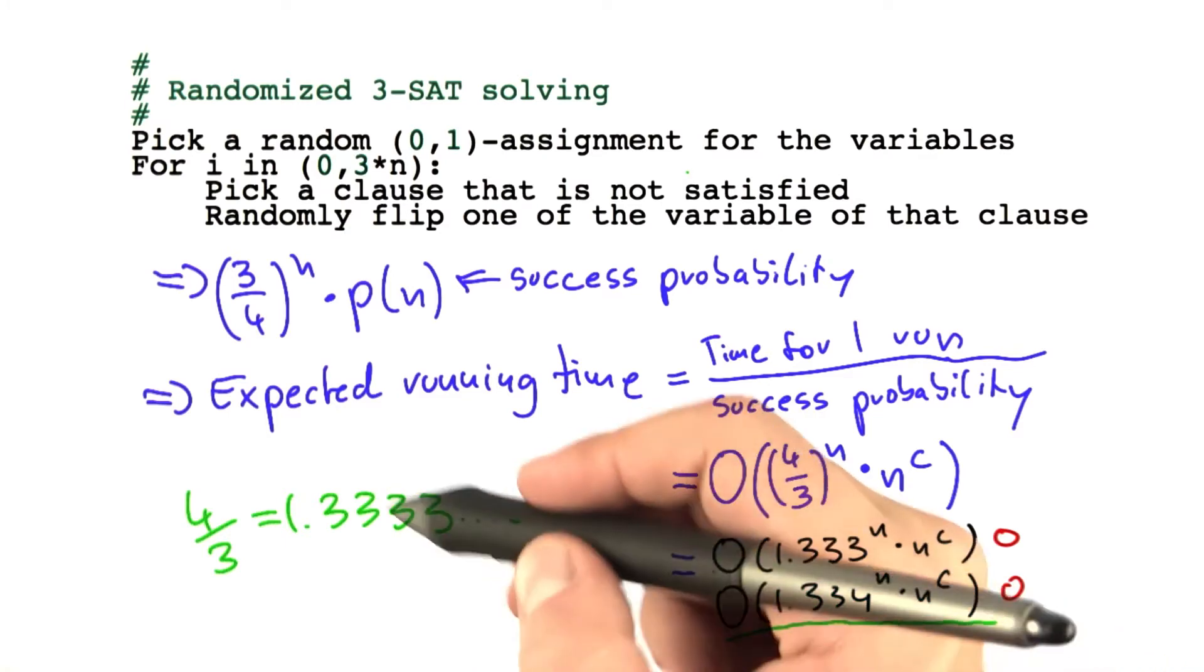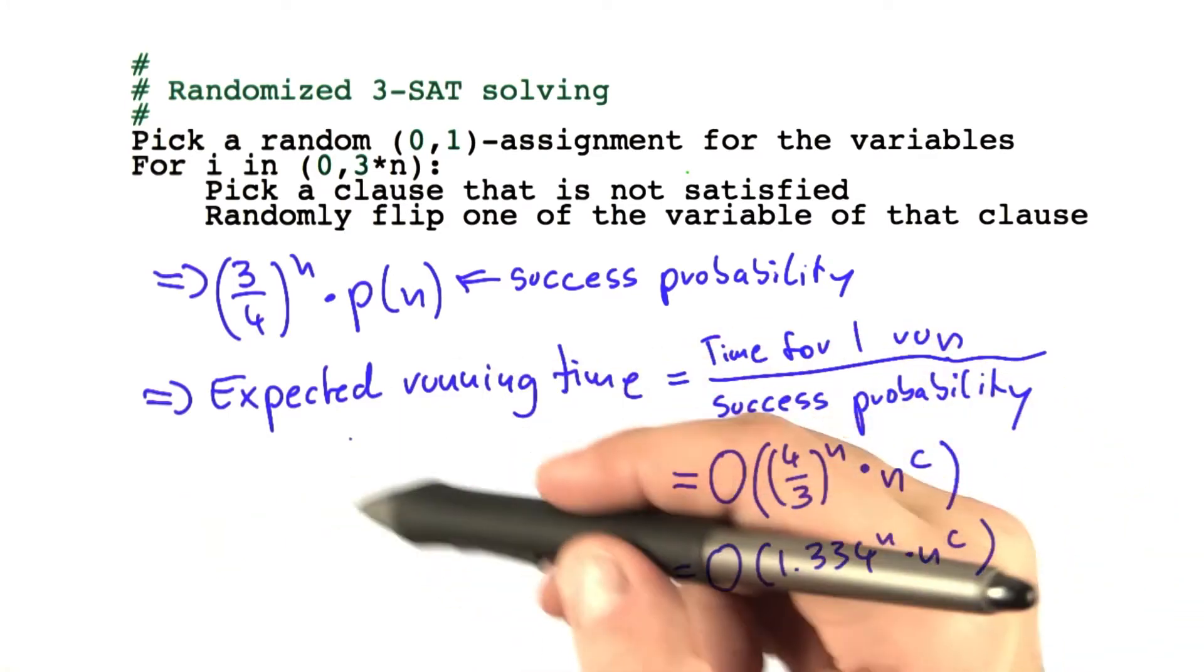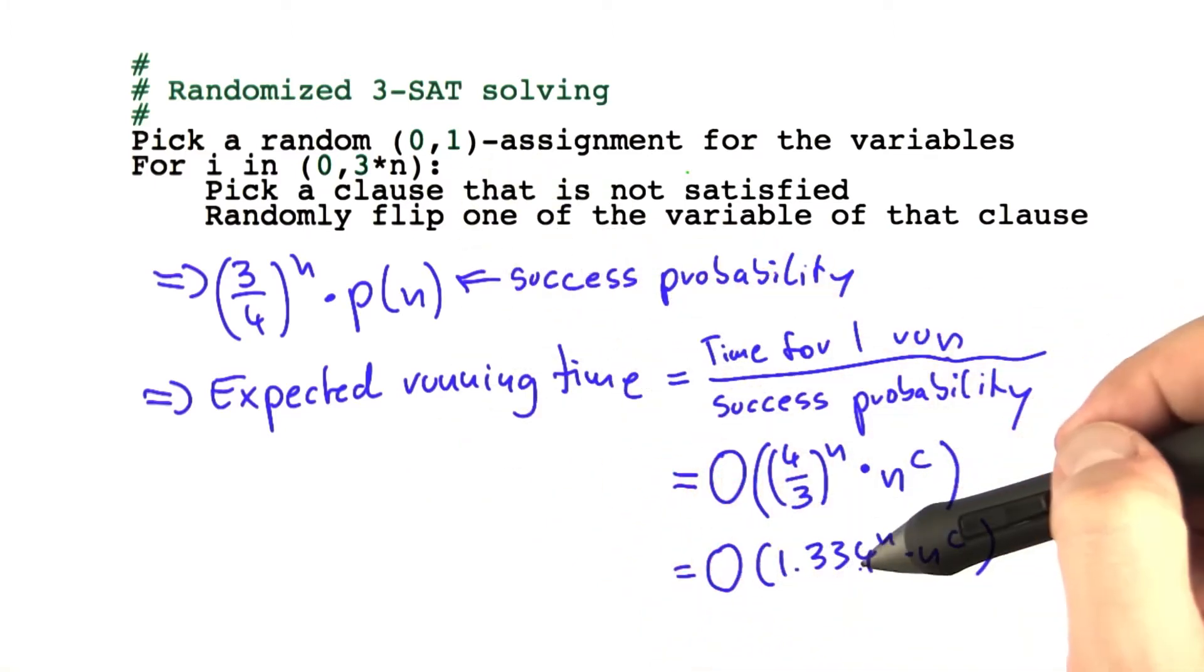And for O notation to be correct, you have to round up no matter what the digit is that you're rounding. So the expected running time for this algorithm here is actually exponential in n. Now you might be asking,